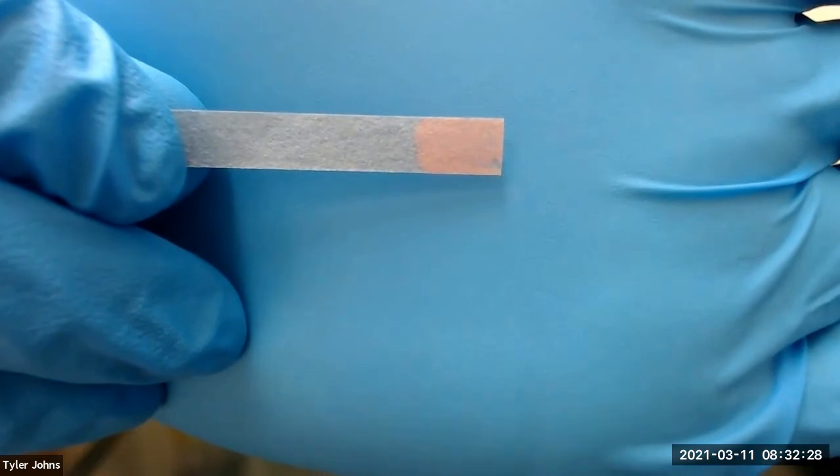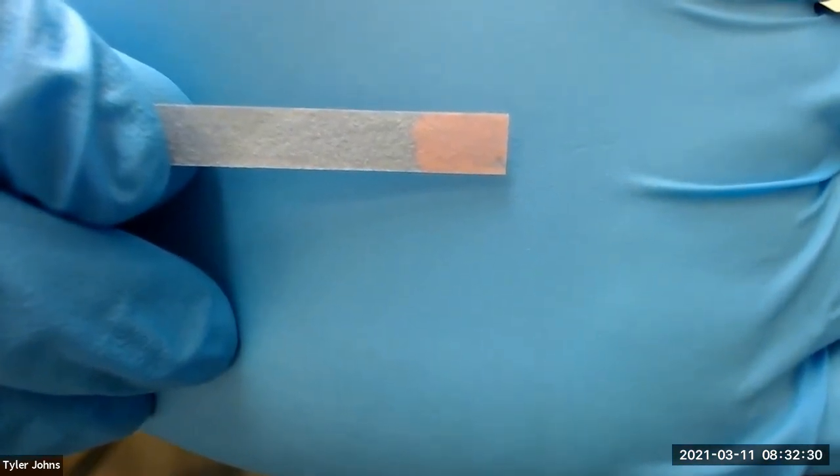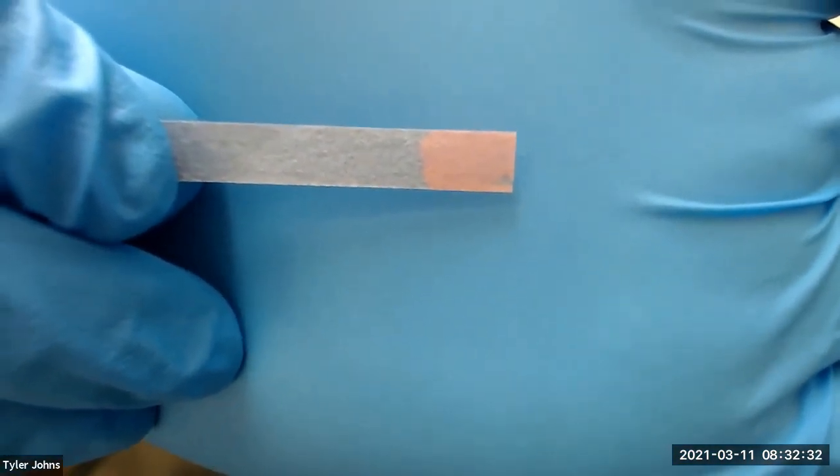The solution has turned the blue litmus paper red, indicating that the compound is acidic.